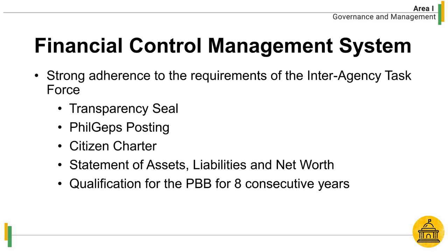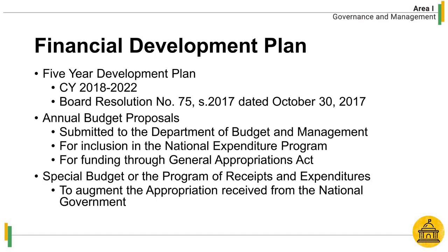PSAU qualifies for the PBB for eight consecutive years, 2012 to 2019. PSAU maintains a five-year development plan, the latest of which covers calendar year 2018 to 2022, approved by the Board through Board Resolution No. 75, Series of 2017, dated October 30, 2017. To realize PSAU's development plan, annual budget proposals are prepared and submitted to the DBM for inclusion in the National Expenditure Program for funding through GAA. PSAU also prepares an annual special budget or program of receipts and expenditures for use of collections from tuition, other fees, and income-generating projects, to augment the appropriation received from the national government.